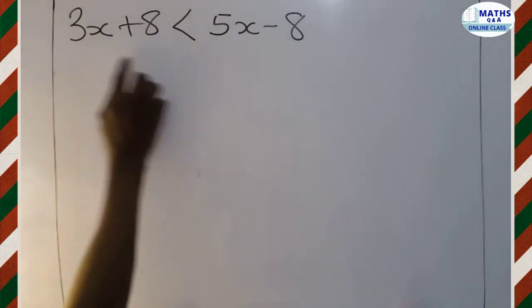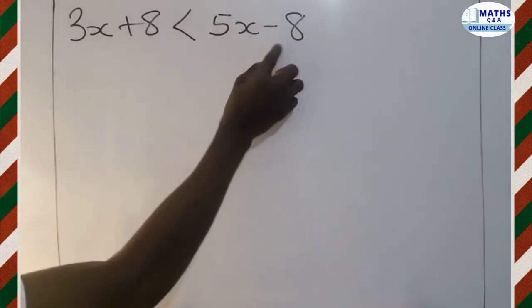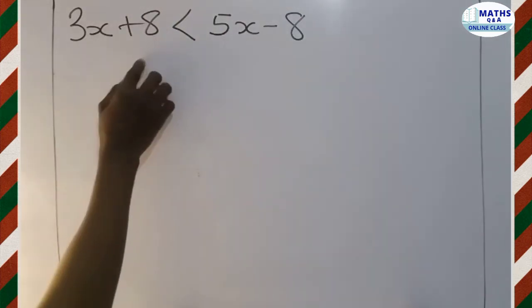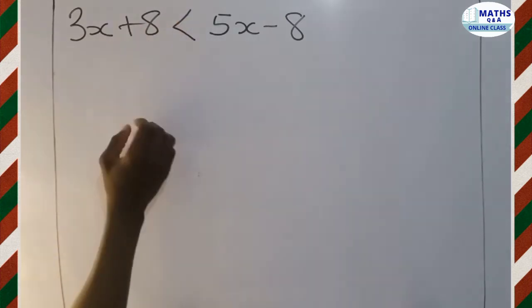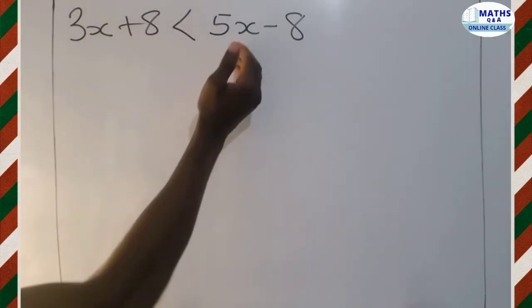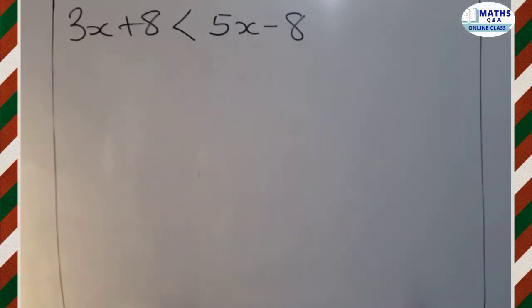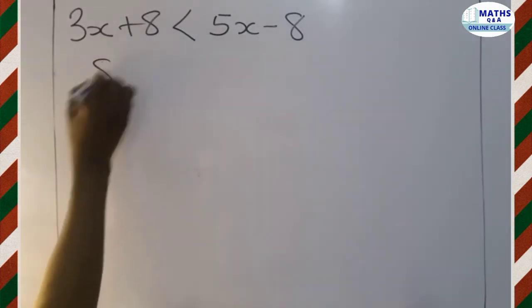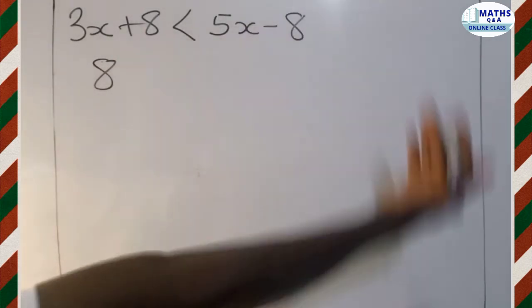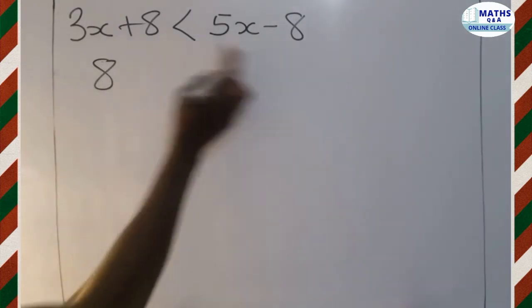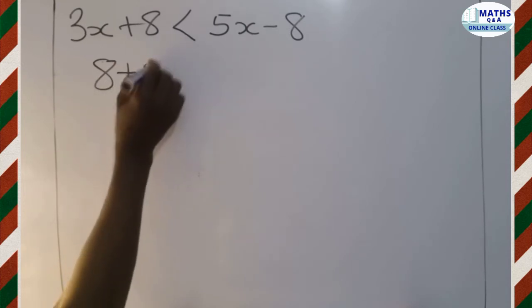Now, I have 3x here. I have 5x here. I want to send the 3x to this side. And then send the negative 8 to this side. That means I want to write the constant numbers at the left hand side of the inequality. And I want to write those having x in them at the right hand side. So if I'm writing the constant numbers, then I write 8 here. Now, I'm sending this negative 8 from the right hand side to the left hand side of the inequality. It's negative. So when it comes here, you have to go out positive. So I write positive 8.